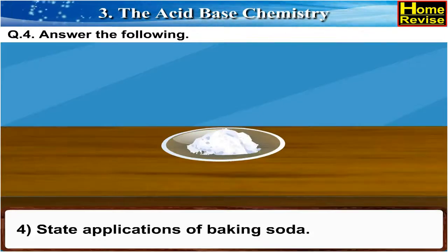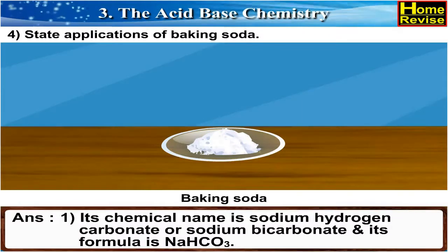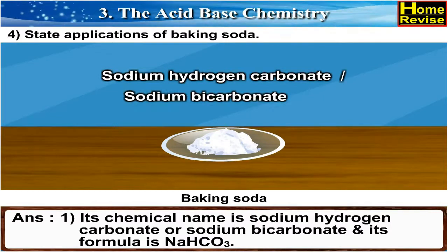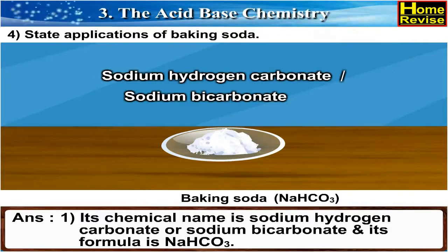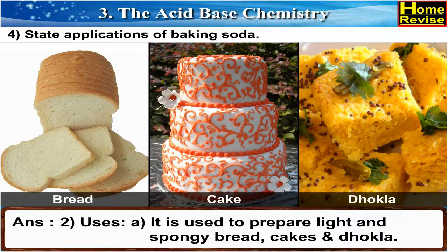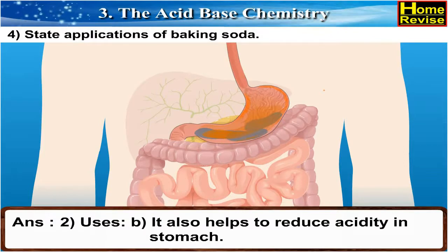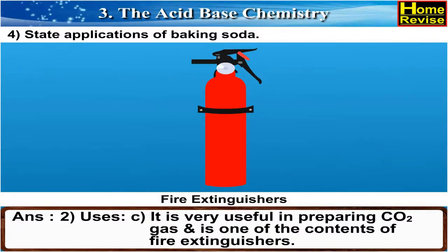Question 4: State the applications of baking soda. Baking soda is a white amorphous powder. Its chemical name is sodium hydrogen carbonate or sodium bicarbonate, and its formula is NaHCO3. Uses: It is used to prepare light and spongy bread, cakes and dhokla. It also helps to reduce acidity in the stomach.